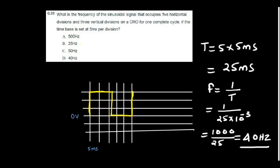What is the frequency of the sinusoidal signal that occupies 5 horizontal divisions and 3 vertical divisions on a CRO for one complete cycle, if the time base is set at 5 millisecond per division? So each division is 5 millisecond. The signal occupies 5 divisions. We want the time period so we have to worry only about the horizontal boxes. 5 multiplied by 5 is 25 millisecond. What is the frequency? 1 upon T. If you simplify, you will get 40 hertz as the answer.